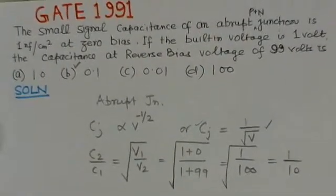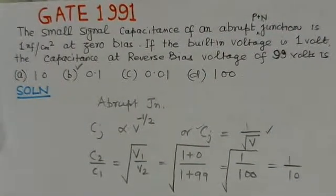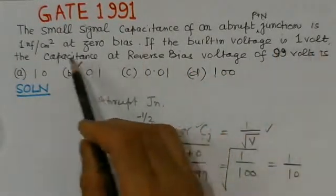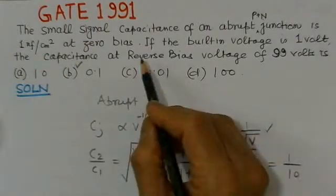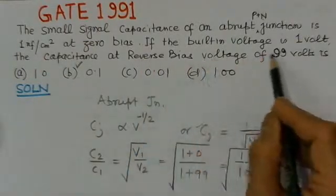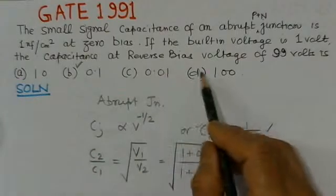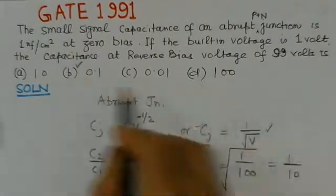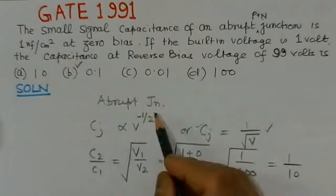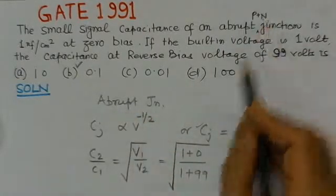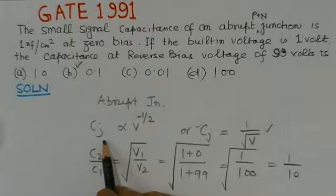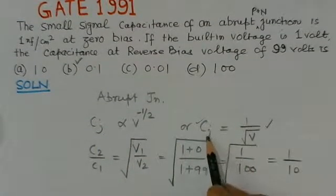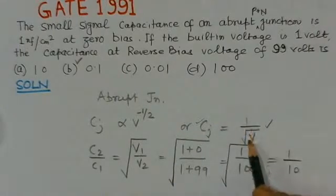The third problem is from GATE 1991. It states: the small signal capacitance of an abrupt P-plus-N junction is 1 nanofarad per centimeter squared at zero bias. If the built-in voltage is 1 volt, find the capacitance at a reverse bias voltage of 99 volts. Since the junction is P-plus-N, it is abrupt, so C_J is proportional to V to the power of minus one-half, or C_J equals 1 over root V.